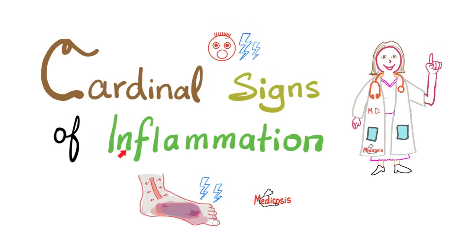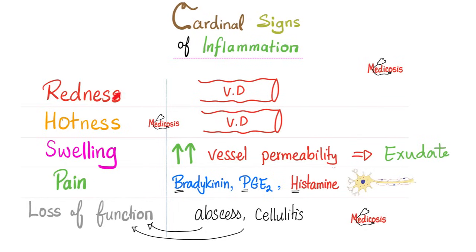What are the cardinal signs of acute inflammation? In English: redness, hotness, swelling, pain, loss of function. In Latin: rubor, calor, tumor, dolor, functio laesa. Bradykinin is not only responsible for vasodilation and therefore the redness, hotness, and swelling, but also responsible for pain mediation. I've talked about pain sensation and the gate theory of pain in my neuroanatomy playlist.